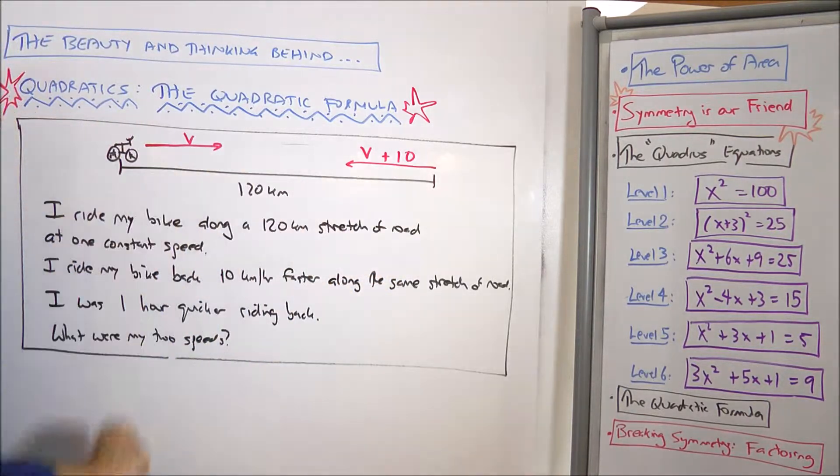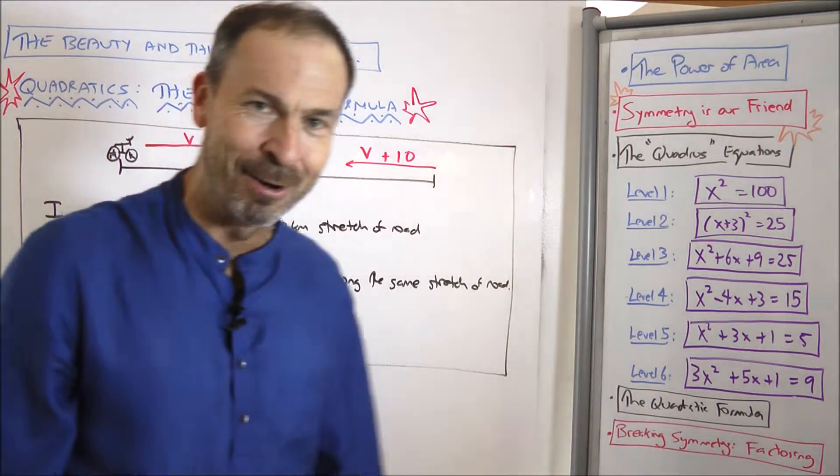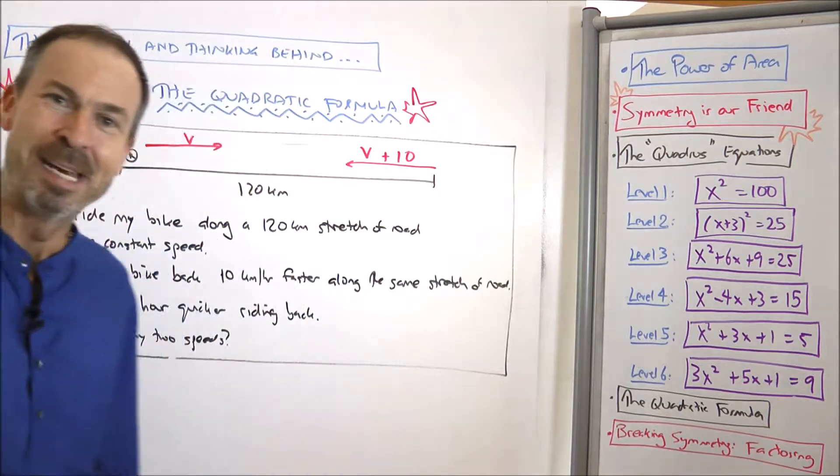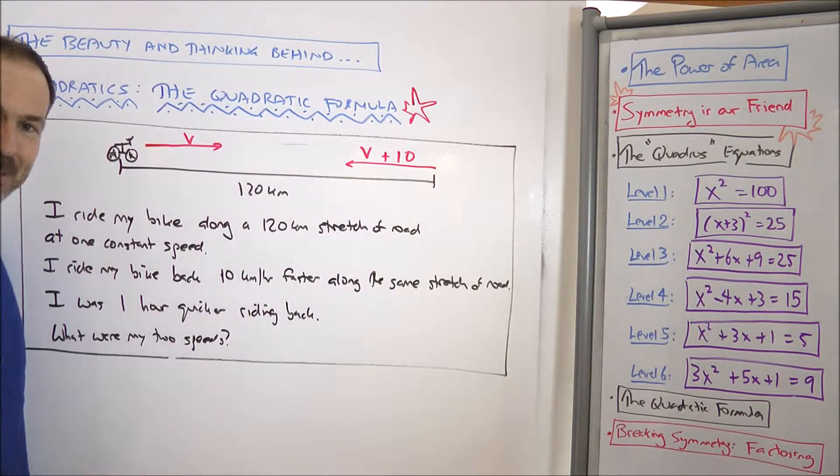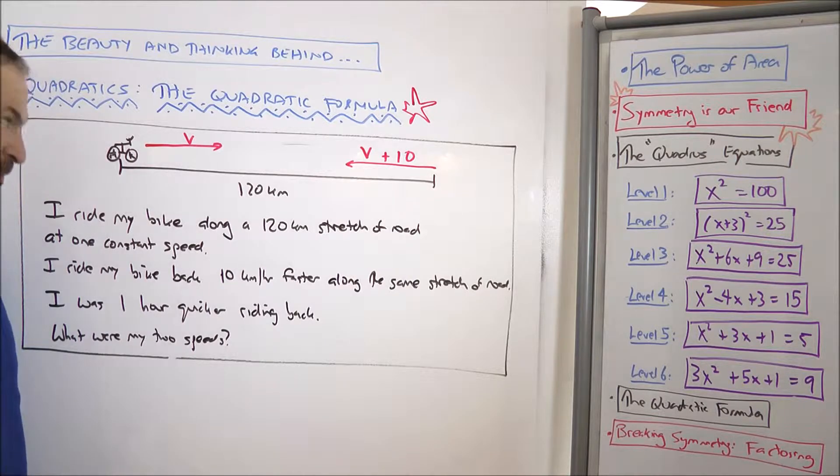If it took me one hour quicker to get back by going 10 kilometers per hour faster, what was my initial speed? What was my final speed? Can you work this one out? This is quite the quadratic problem. Good luck!